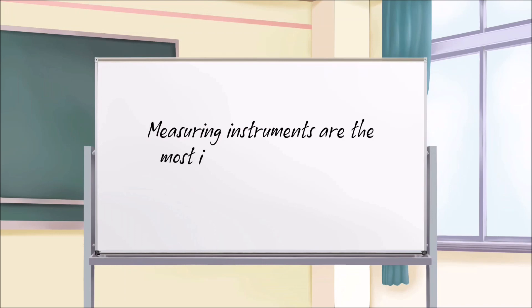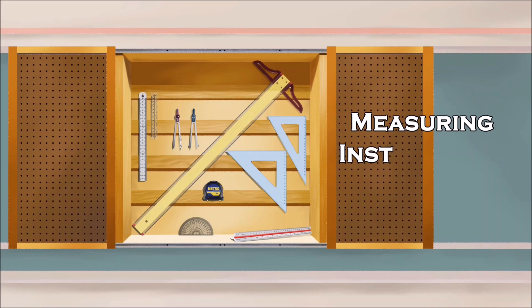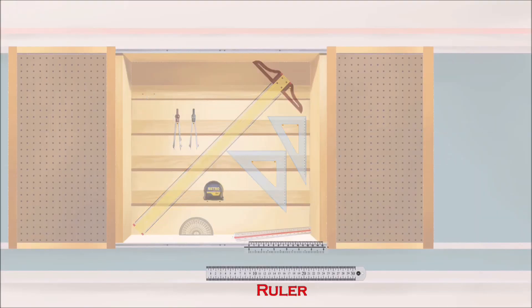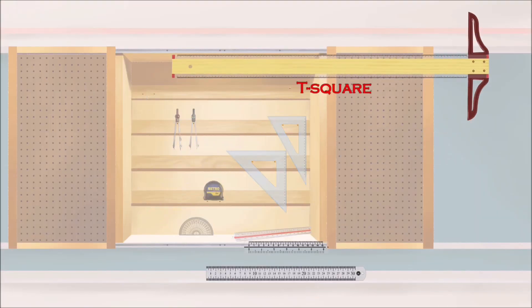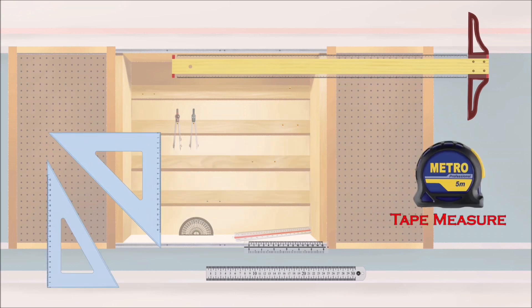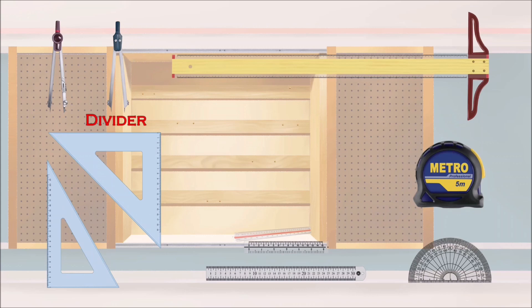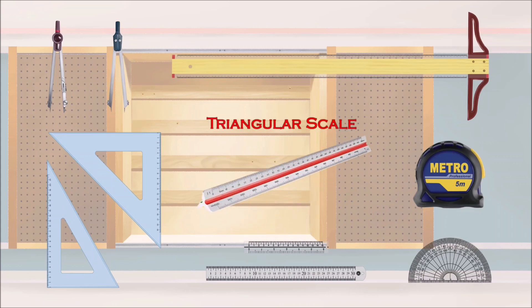Measuring instruments are the most important part of the measuring process. The measuring instruments include: Ruler, T-Square, Triangles, Tape Measure, Protractor, Compass, Divider, and Triangular Scale.